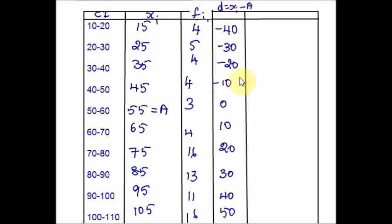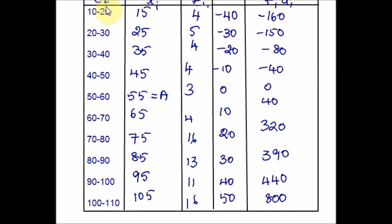Now we are going to multiply the numbers in the F and D columns — multiply the corresponding values. For example: 4×(−40), 5×(−30), 4×(−20), and so on — giving the fi·di values. Hope you are clear with the tables. I have entered all the given information in class interval and frequency, found the x values from the midpoints, assumed A, calculated column D, and multiplied to get the last column. As usual, find the summation of the frequency column and the product column. The total for frequency is 80 and the total for fi·di is 1560.